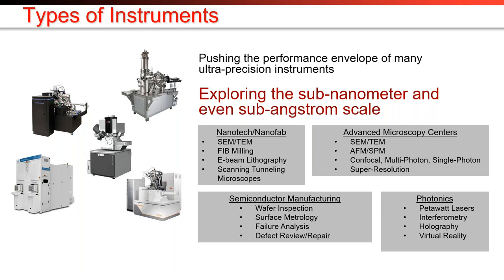Nanotechnology facilities and nanofabs also use electron microscopes and dual beam instruments — ion beam and electron beam combined for milling, and electron beams for lithography. We also see a lot of activity in new photonic centers and sensors, work in virtual reality, holography, interferometers, and even ultra-high energy lasers up to petawatt lasers — 10 to the 15th watt laser facilities are becoming increasingly popular. And finally, semiconductor manufacturing sites, including the wafers, masks, inspection of finished wafers, surface metrology, and failure analysis.